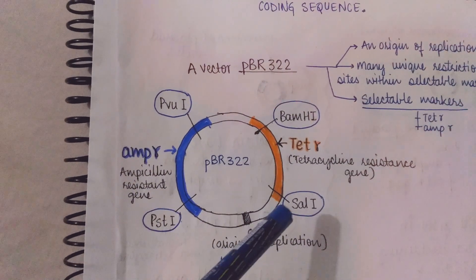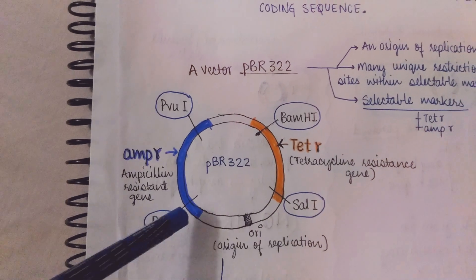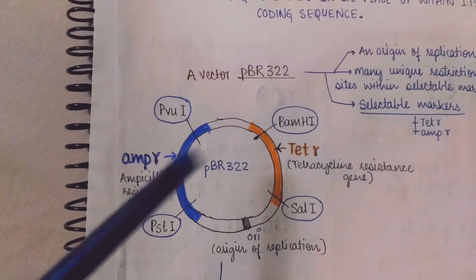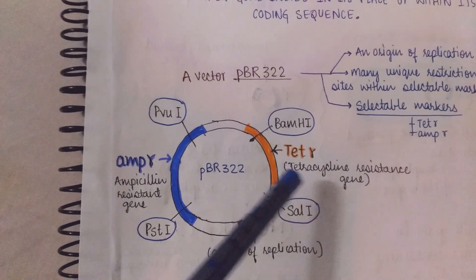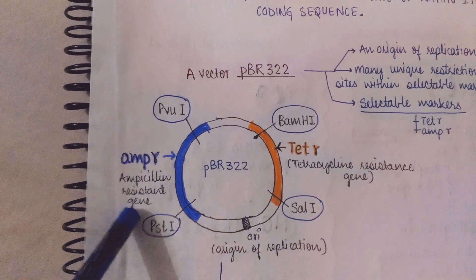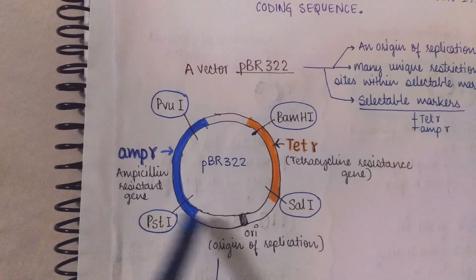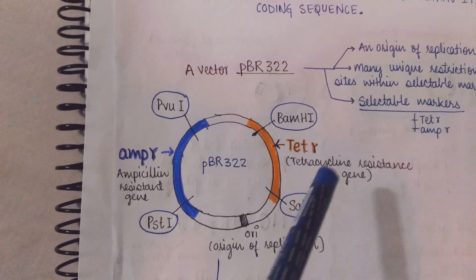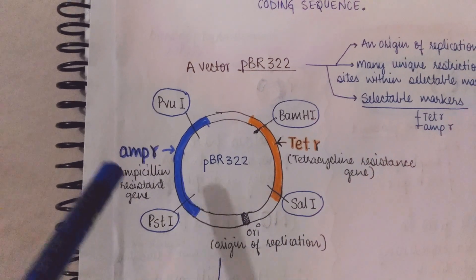Here the selectable markers are shown in colors. The blue color and orange color. Orange color is tetracycline resistant gene and blue color is ampicillin resistant gene. It means that this plasmid will grow in a tetracycline medium and ampicillin medium.